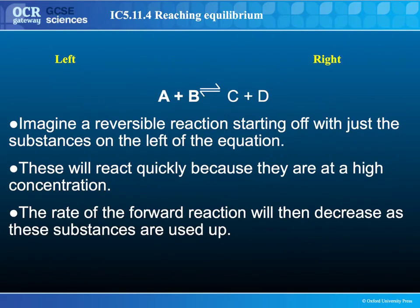The key place to start is with a reversible reaction. A reversible reaction is one that can take place in two directions. In this reaction, A and B can become C and D, but also C and D can become A and B. If you start with a lot of A and B, the forward reaction — going from left to right — will occur and the products C and D will form.